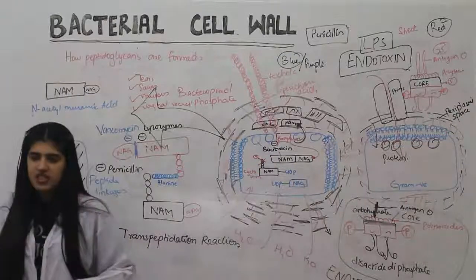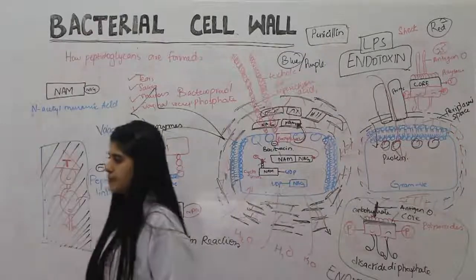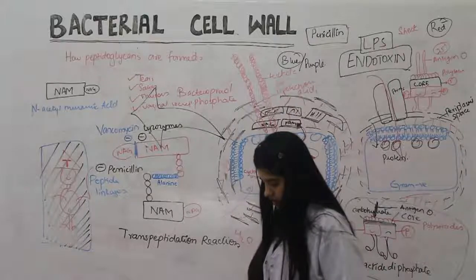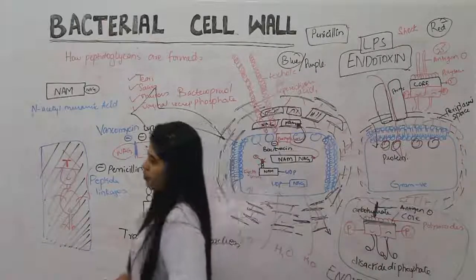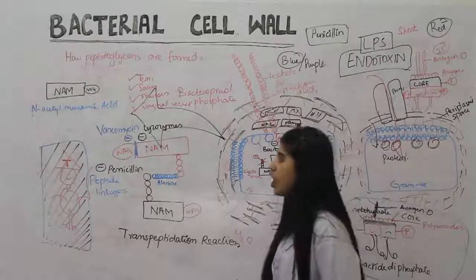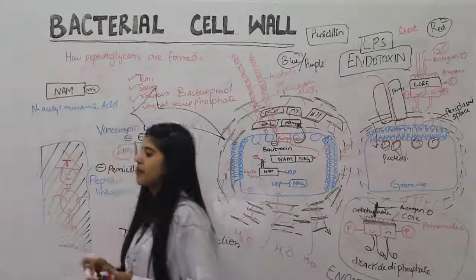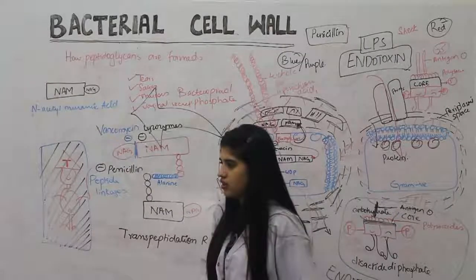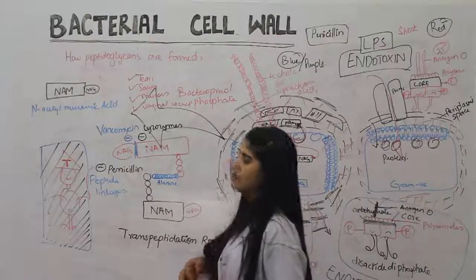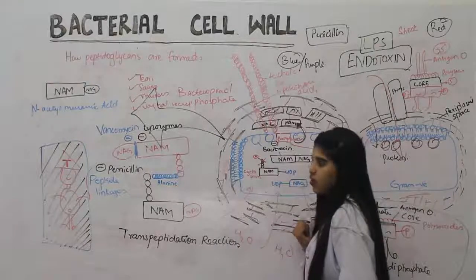Thousands of bacteria are present in our surroundings every day, but we don't get infected because of lysozymes in our saliva and tears. These prevent bacterial growth. If someone takes antibiotics, the bacteria will be destroyed because without peptidoglycan or a proper cell wall, the bacteria is killed. This is how our natural lysozyme defense and antibiotic drugs prevent bacterial infection.